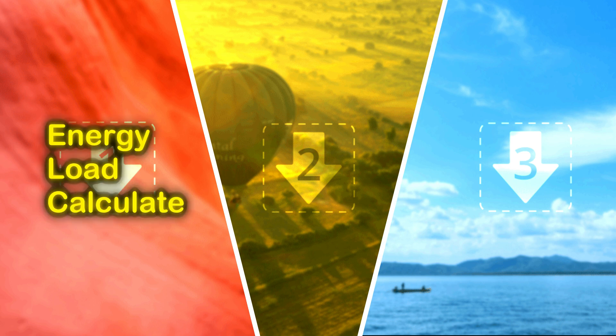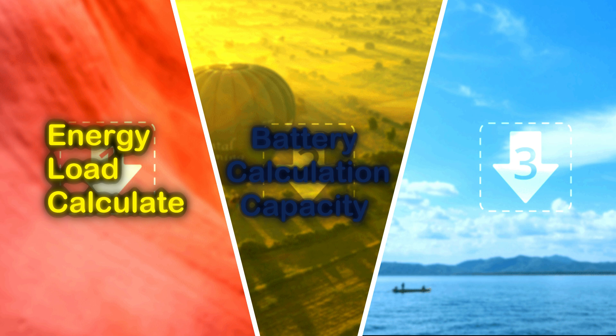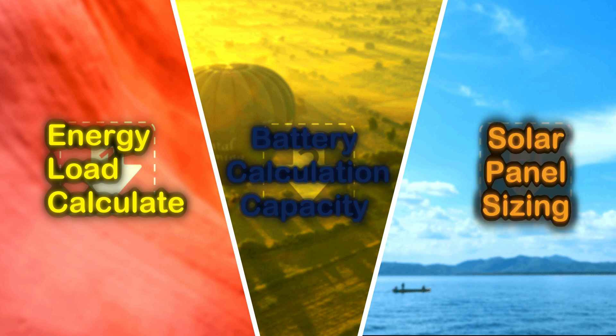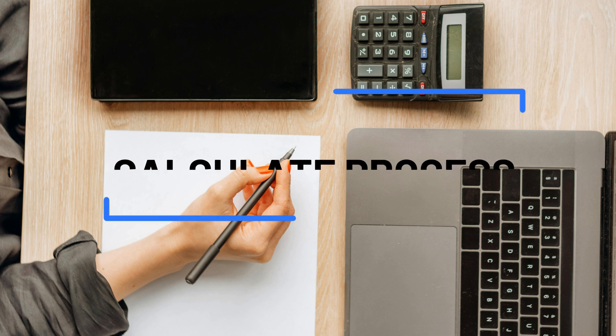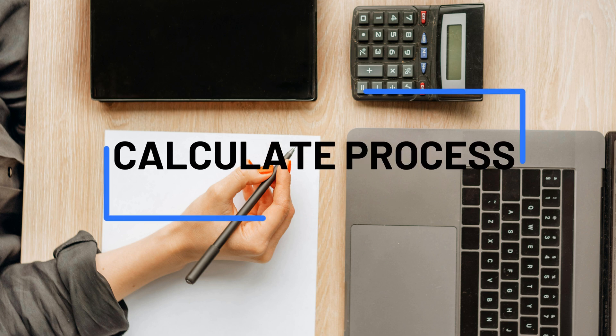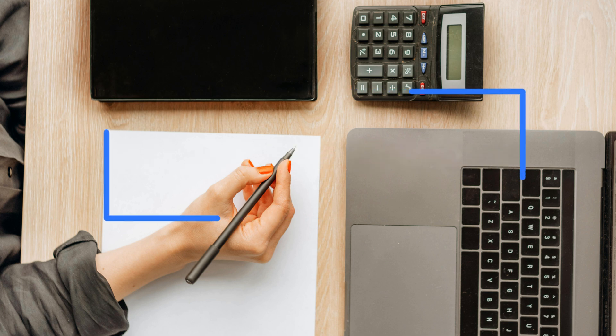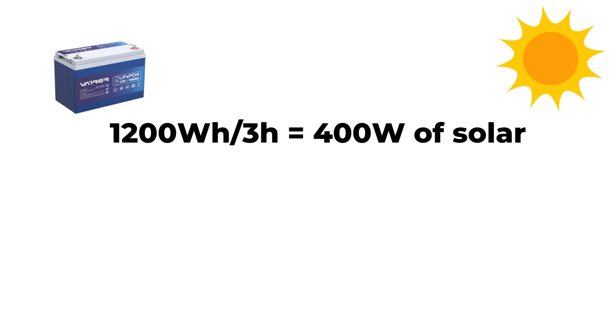First, we need to calculate your load or power usage. Second, is the battery capacity calculation. And third, sizing your solar panels based on your location. Let me give you a simple example: a 1,200 watt-hour battery divided by 3 sun hours requires 400 watts of solar panels to charge that battery.